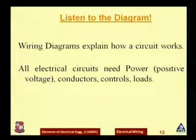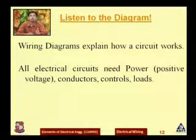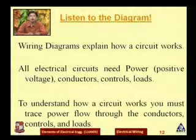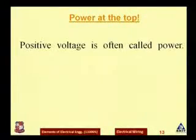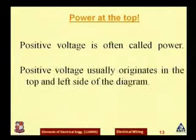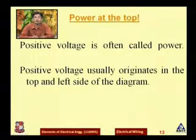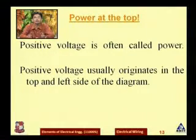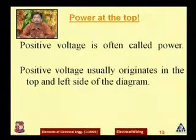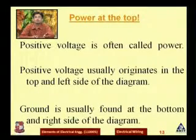A wiring diagram explains how a circuit actually works. All electrical circuits need power — that is positive voltage — conductors, controls, and loads. To understand a wiring diagram you must trace the power flow through conductors, controls, and loads. Positive voltage usually originates at the top and left side of the diagram, while the ground is usually found at the bottom and right side.